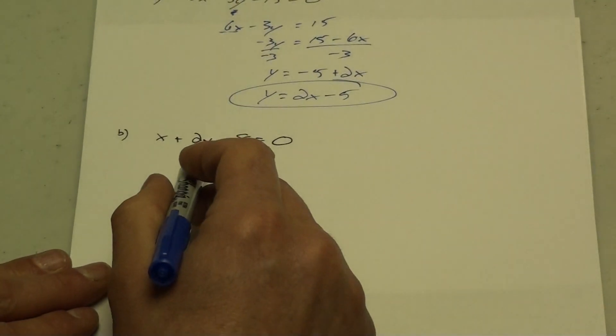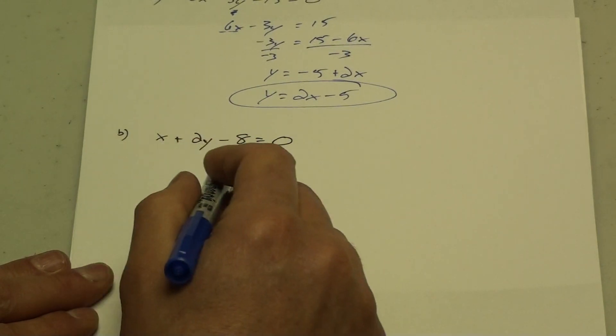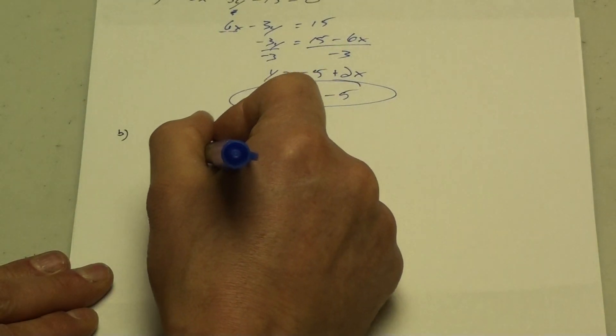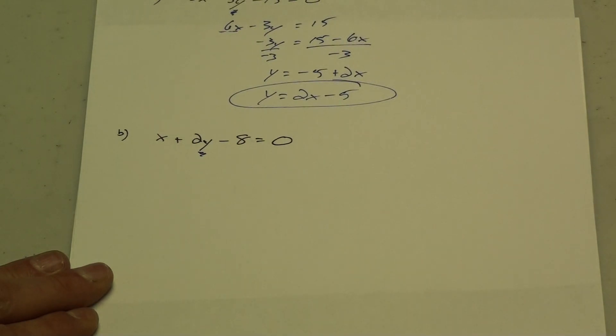Let's do another example. Here I have it in standard form, everything on one side equal to 0. I want to get that y by itself to get slope y-intercept form.